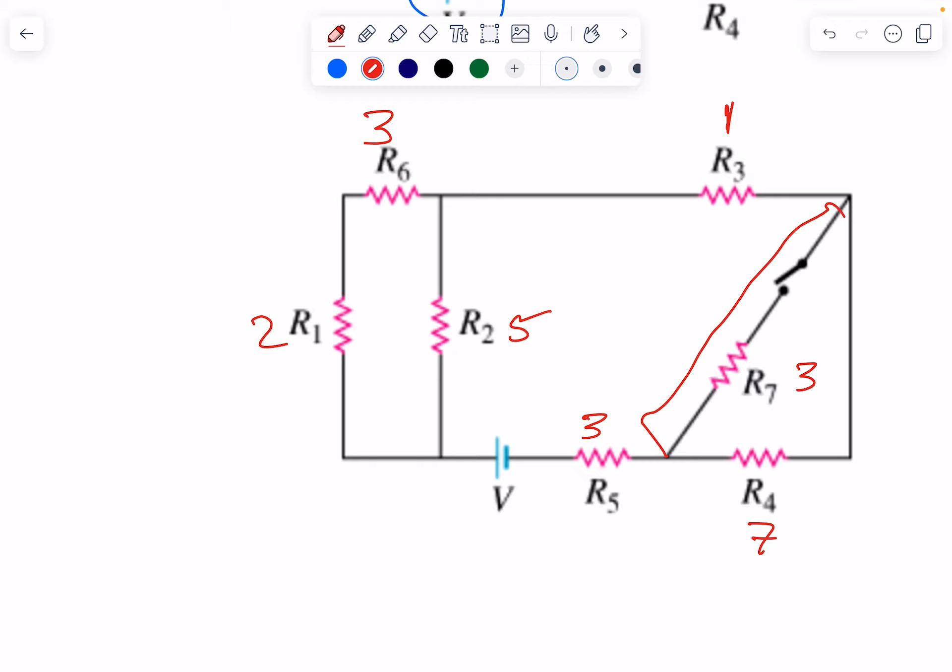When the switch is open, we can ignore this section. If we start at R3, you get R3 plus R4 plus R5 in series.